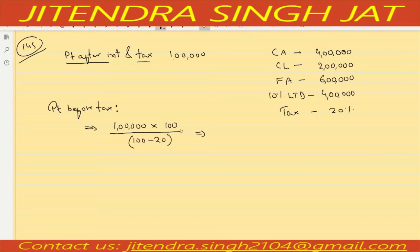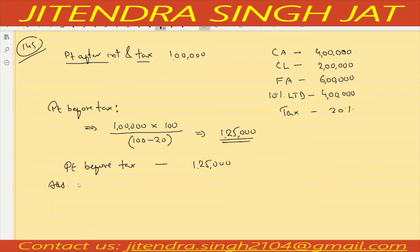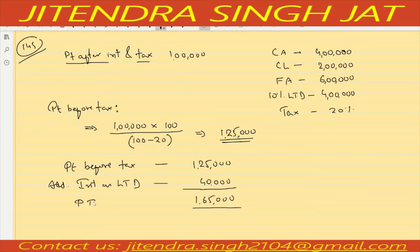So profit before tax equals 1 lakh multiplied by 100 divided by 80, which comes to 1,25,000. We have computed profit before tax as 1,25,000, but we need profit before interest and tax, so we add interest on long term debt. 10 percent of 4 lakh is 40,000. Therefore, 1,25,000 plus 40,000 equals 1,65,000, which is profit before interest and tax.